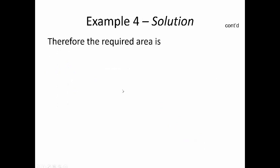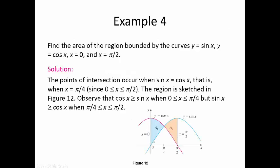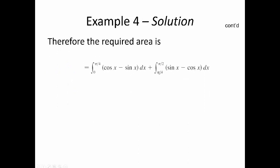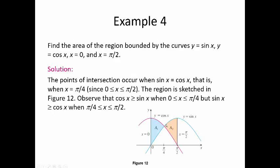So the required area is: Area 1, from 0 to pi over 4, of cosine of x minus sine of x — that's the top graph minus the bottom graph. Plus Area 2, from pi over 4 to pi over 2, of sine of x minus cosine of x — now sine is on top and cosine is on bottom.